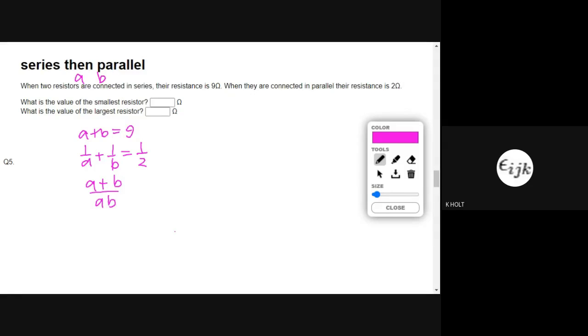Making this into a fraction, I get A plus B over AB equals 1 half, so 2 times A plus B equals AB. We know A plus B is 9, so that becomes 18.